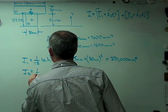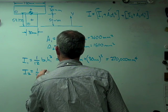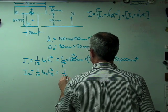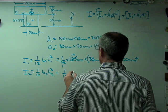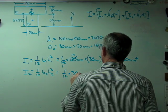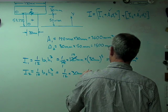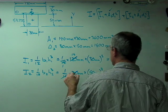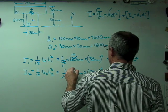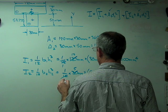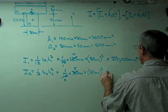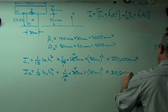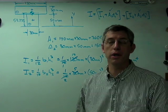I2 is pretty much the same expression, with slightly different numbers plugged into it. 1/12 times the base, which is 30 millimeters, times the height, which is 50 millimeters cubed. And again, we can make some cancellations. Let's see, 5 times 6 is 30, so I'll put a 5 there. And 2 times 6 is 12, so I'll put a 2 there. If you work that out, you get 312,500 millimeters to the fourth. So far, so good.